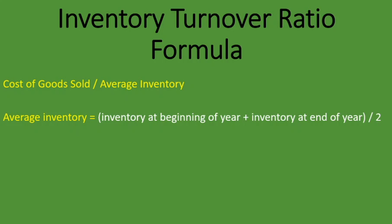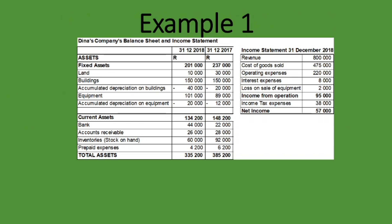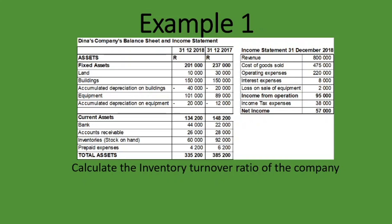Let's go through an example. We're given the statement of financial position (balance sheet) and the statement of comprehensive income (income statement). We only need the asset portion of the balance sheet, because that's what the formula requires. We are asked to calculate the inventory turnover ratio. The formula is cost of goods sold from the income statement — here we have cost of goods sold of 475,000 rand — divided by average inventory. The balance sheet shows figures for end of 2017 and end of 2018.